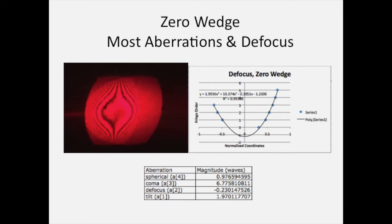We found that there's one wave of spherical aberration, approximately 7 waves of coma, minus 0.2 waves of defocus, and about 2 waves of tilt. Now 7 waves of coma sounds like a lot, and we're not sure that's accurate because this interferogram doesn't really look like what a coma interferogram should.